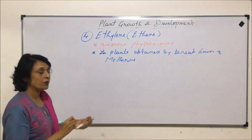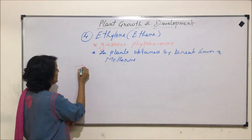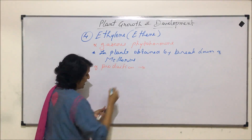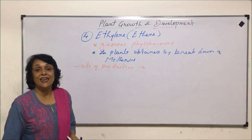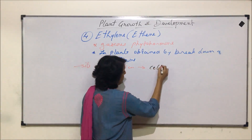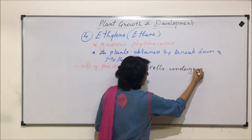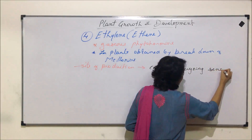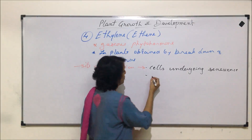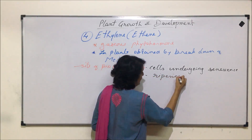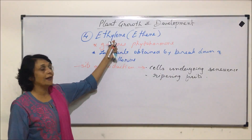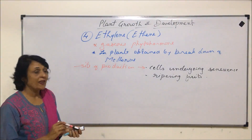The site of production — that means the place where ethylene is produced — is either cells which are aging, that is cells undergoing senescence, or ripening fruits. These are the two main sites where ethylene is produced.